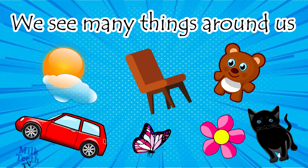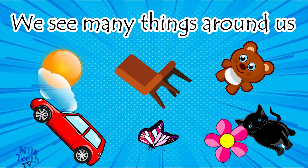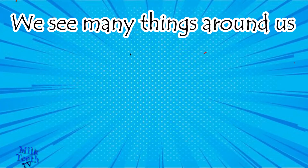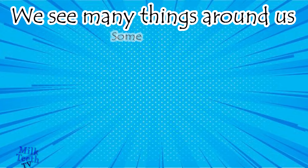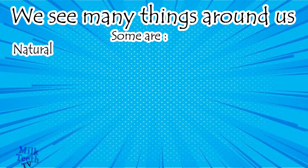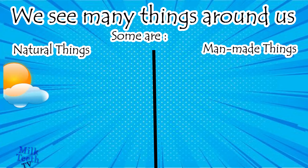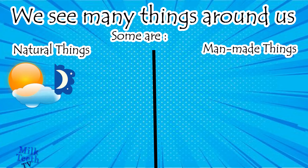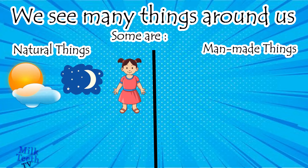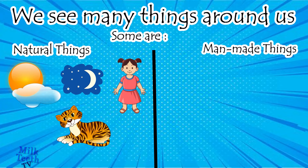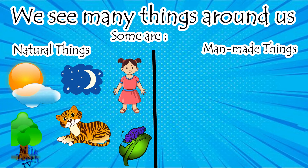A flower and a cat. Of all the things we see around us, some are natural things and the others are man-made things. Things like the Sun, clouds, moon, humans, animals, insects, worms, and plants and trees are all natural things.